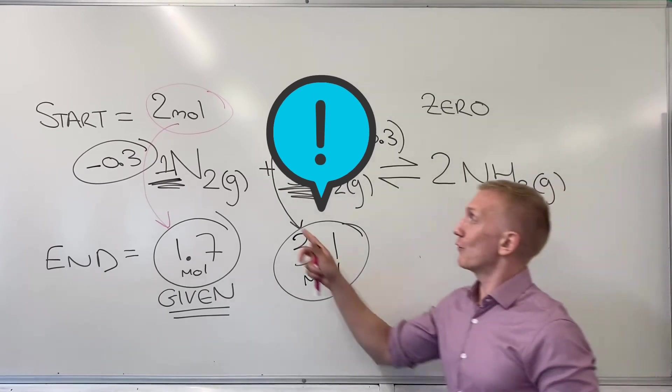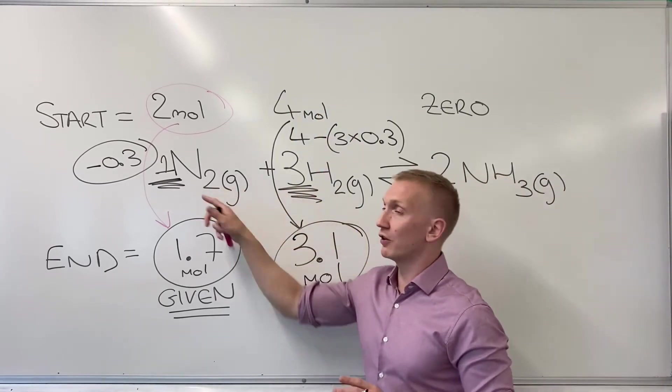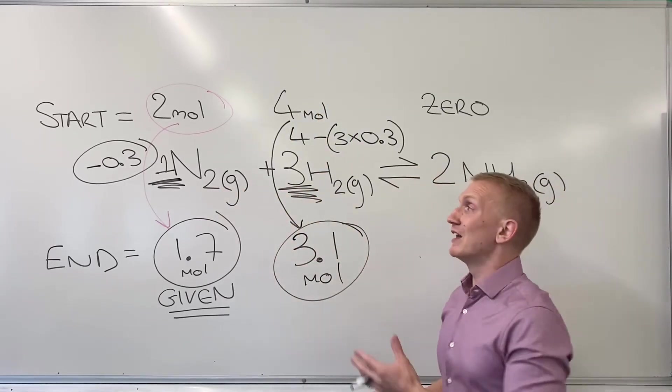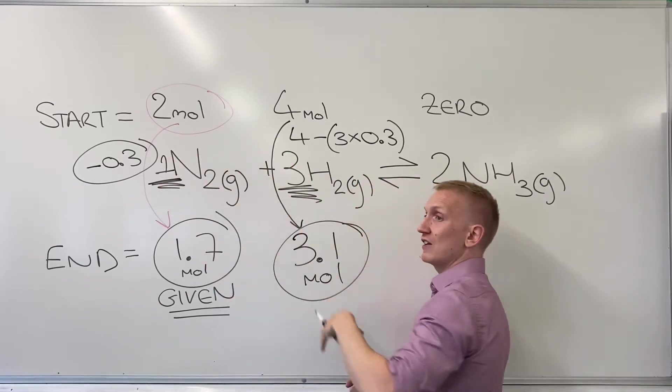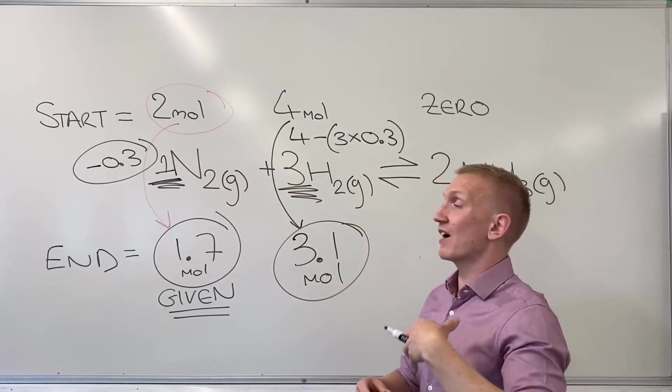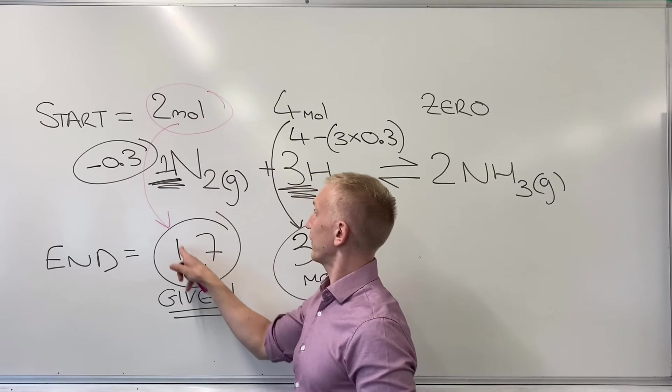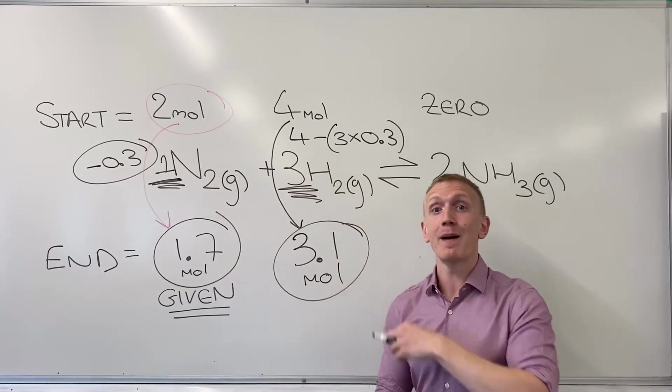So you need to use the ratio of the components in the equilibrium to determine how things change by, what they change down by and so you've got to look for that change in the one that you've been gifted by the question.